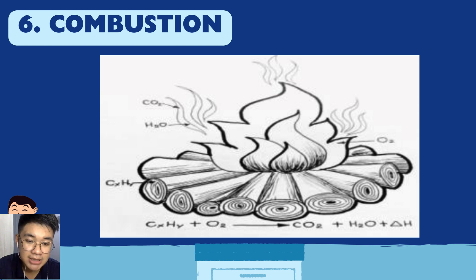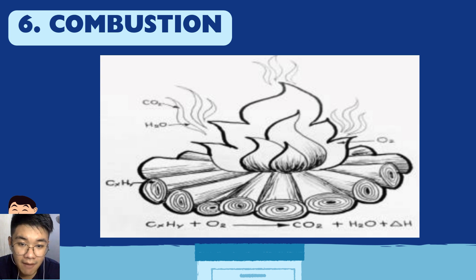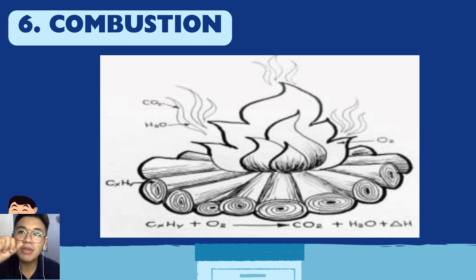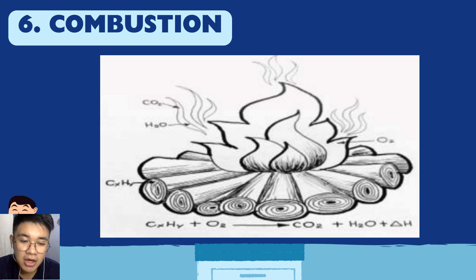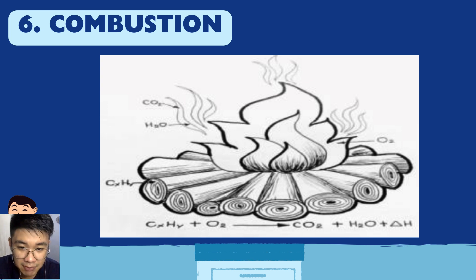Looking at a combustion example: notice the products are CO2 (carbon dioxide) and H2O (water). When something burns, you see steam or smoke — that moisture becomes water droplets, which is your H2O. So the products of combustion are always CO2 (carbon dioxide) and H2O (water), plus heat indicated by the triangle symbol.